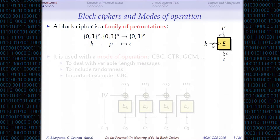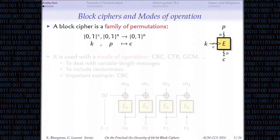First, a bit of definition. A block cipher takes an input of a fixed size, takes a key, and gives you a ciphertext of fixed size. I'm going to use N as the block size. So I'm not talking about format-preserving encryption here — the size is fixed.